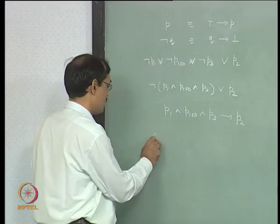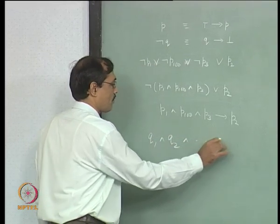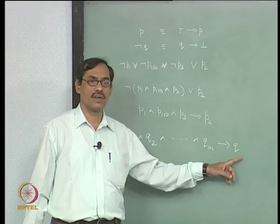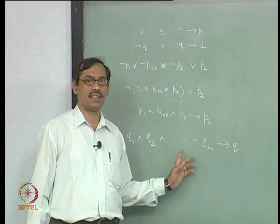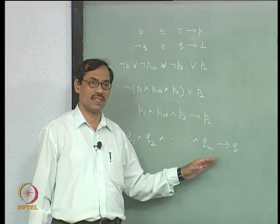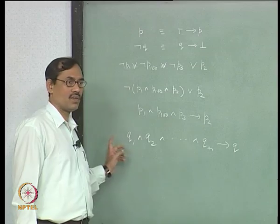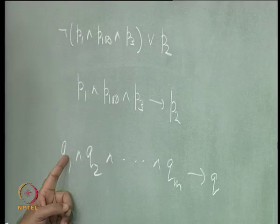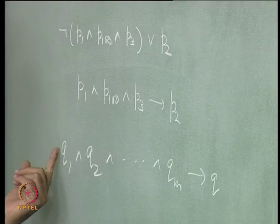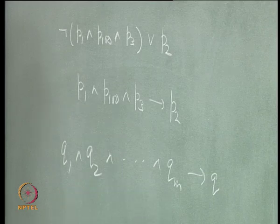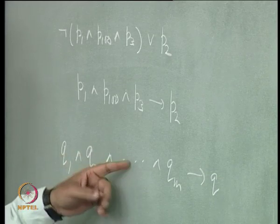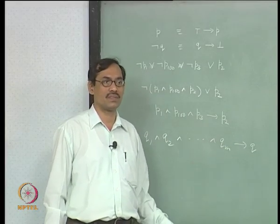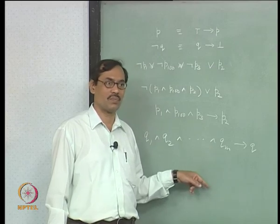In general, we want top and bottom also — we do not stick to just propositional variables. A HORN clause has the form Q1 ∧ Q2 ∧ ... ∧ Qm → Q, where Q1, Q2, ..., Qm and Q have no negation symbols. They are either propositional variables or top and bottom — that is, atomic propositions. If you have top on the left side, you can just forget it because top reduces away. Suppose you have bottom here; then bottom implies Q is always valid. So we do not have to worry about those degenerate forms.